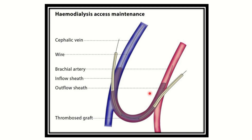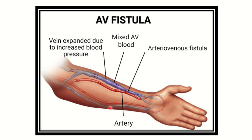Here we can see a vein and an artery, with an artificially made communication between them — this is called a fistula, specifically an arteriovenous fistula. The cephalic vein, as well as the basilic vein and other superficial veins, can be used to create this fistula. For dialysis or fistula creation, it is much easier to access a vessel when it lies in the superficial area. In the hand region, the cephalic and basilic veins are preferred for making the arteriovenous fistula.